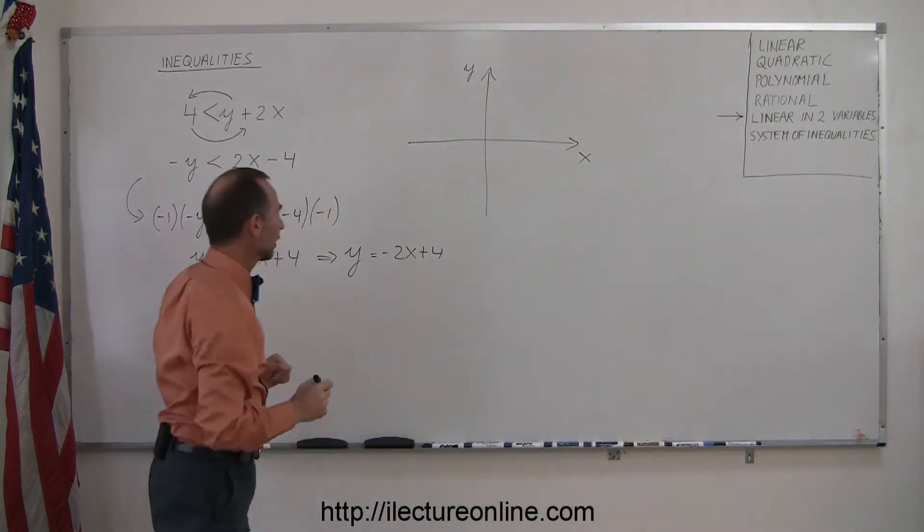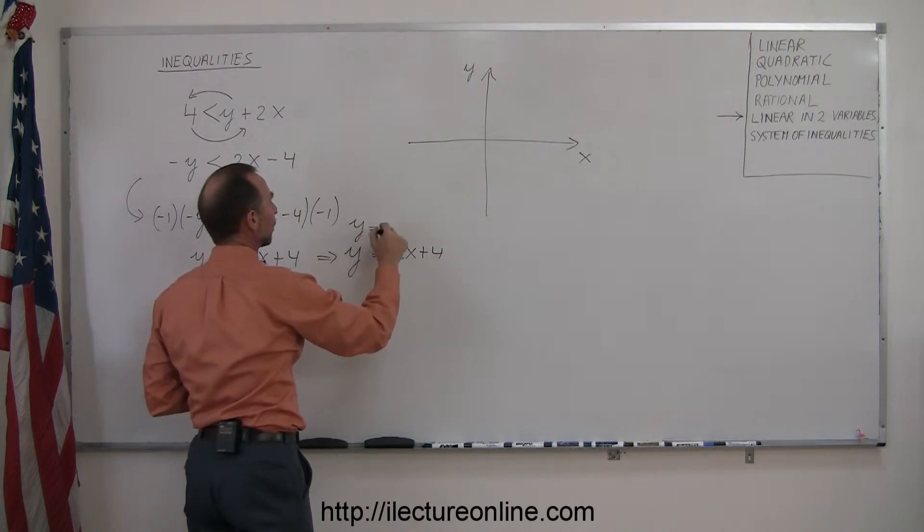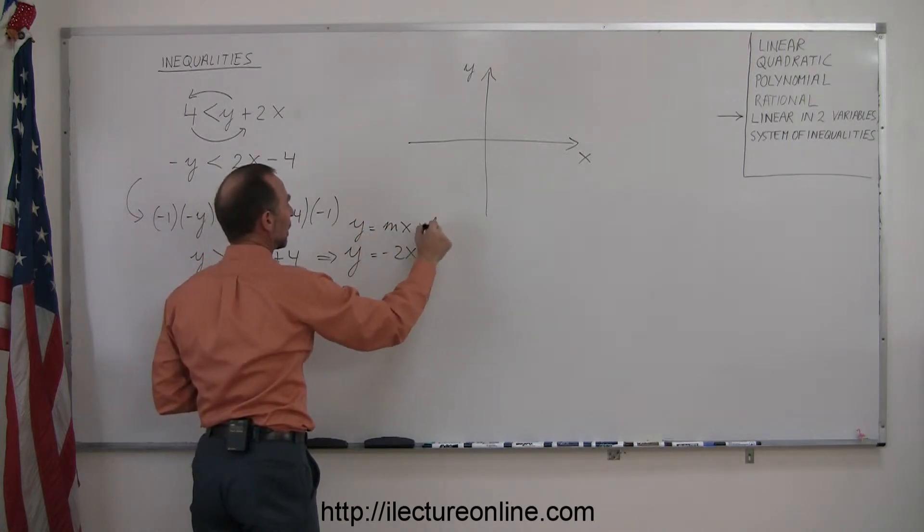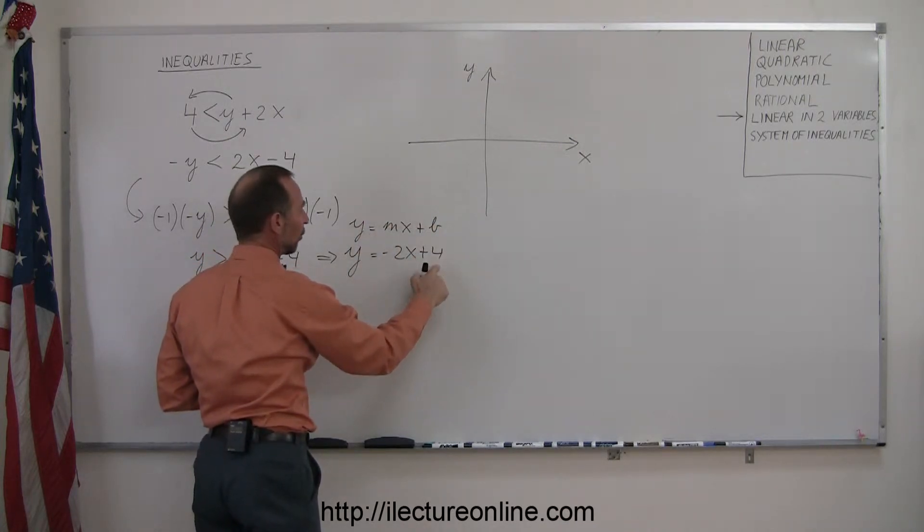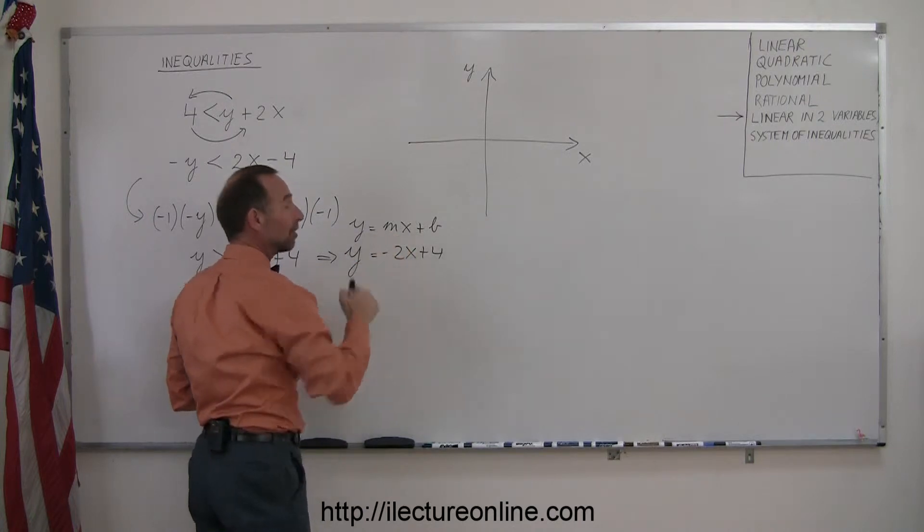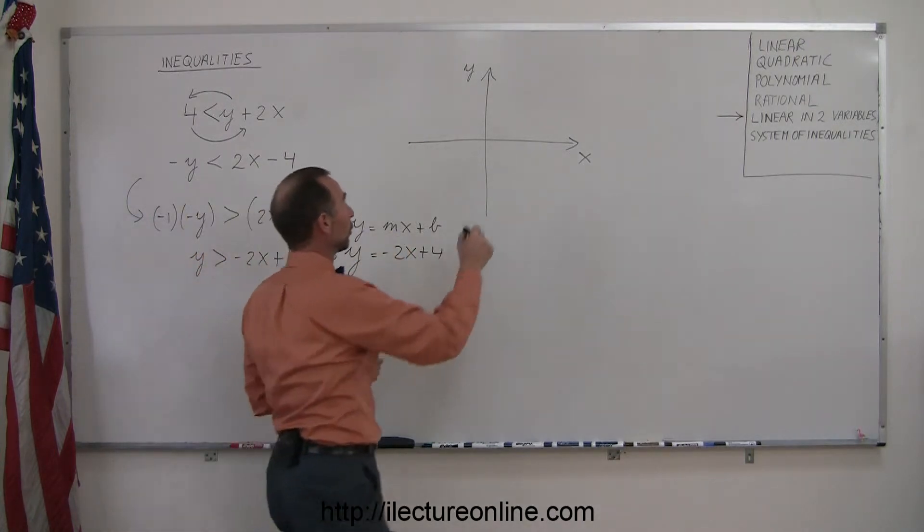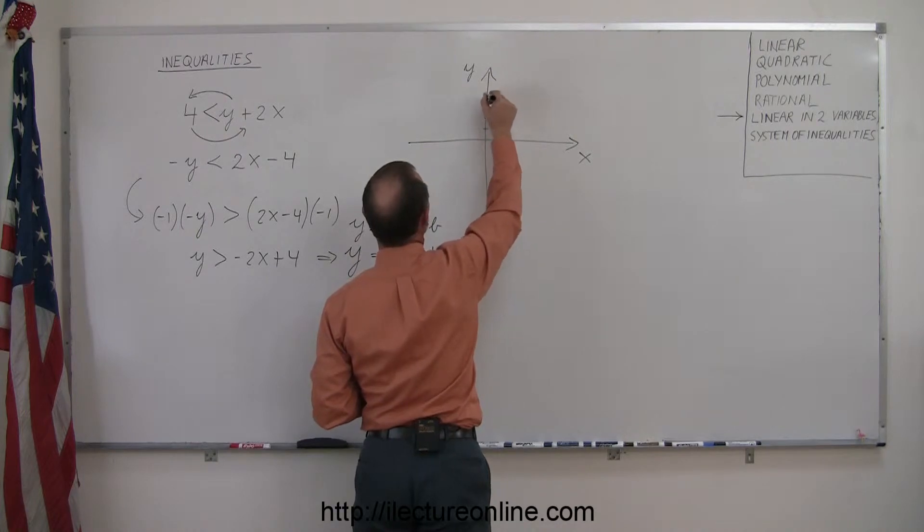This looks just like a linear equation in the form y equals mx plus b, where b is the intercept, in this case 4, and m is the slope, in this case minus 2. So find the point y equals positive 4, right there.